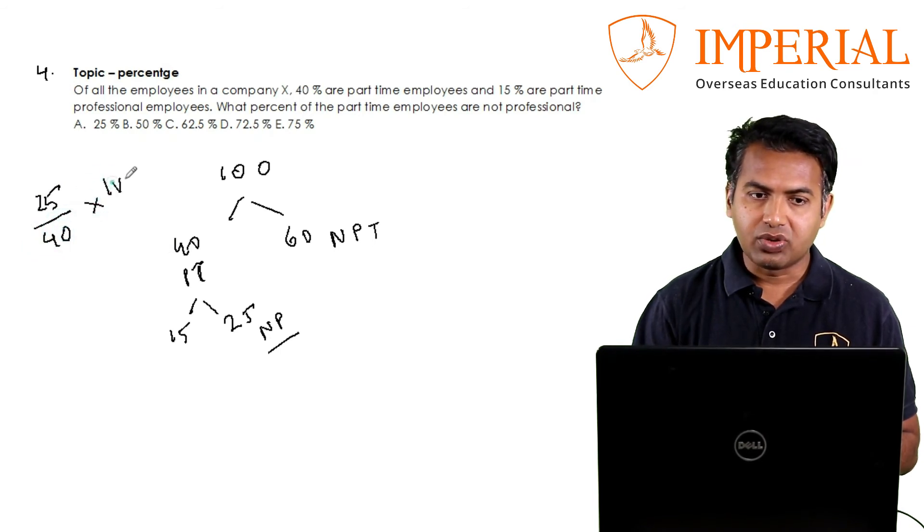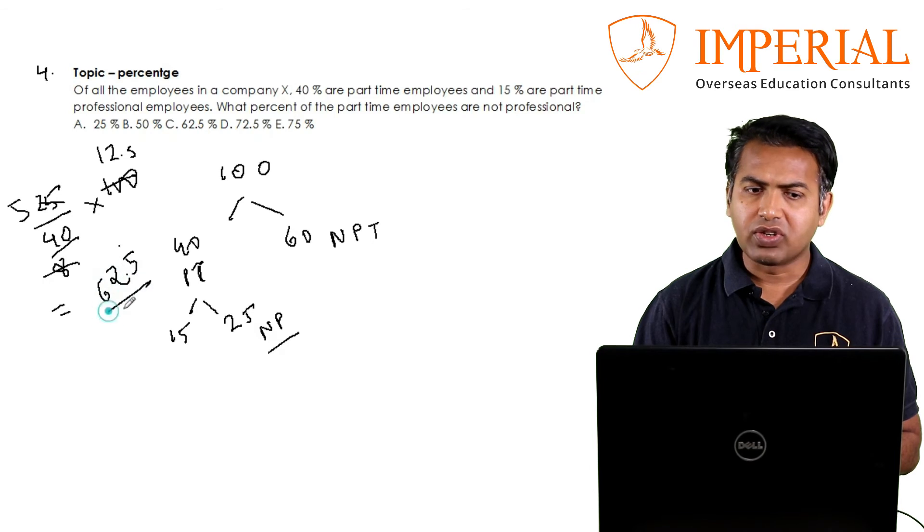What percentage is it? It is 25 out of 40 times 100. 5 by 8, that will be 62.5 percent. C is the answer.